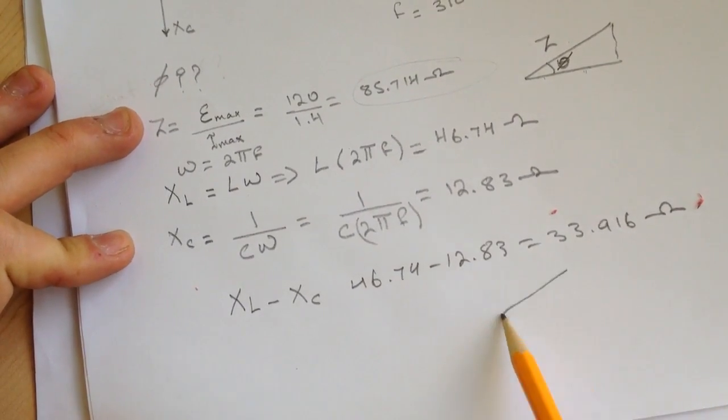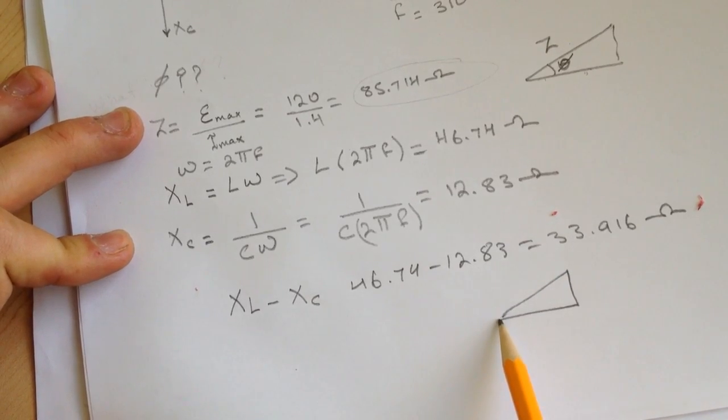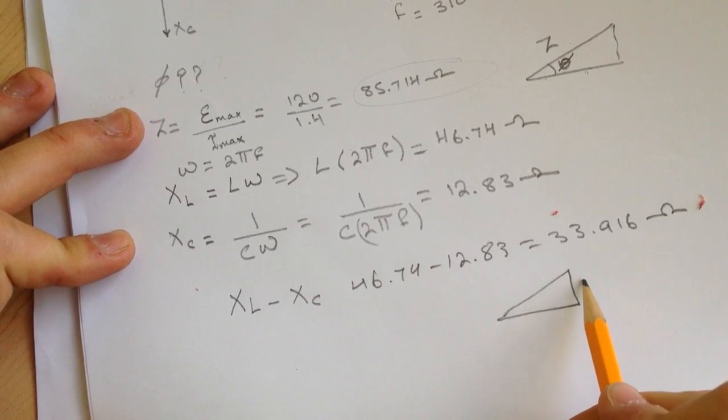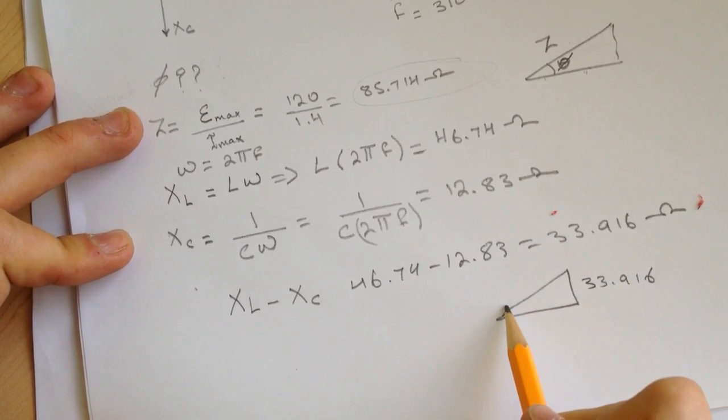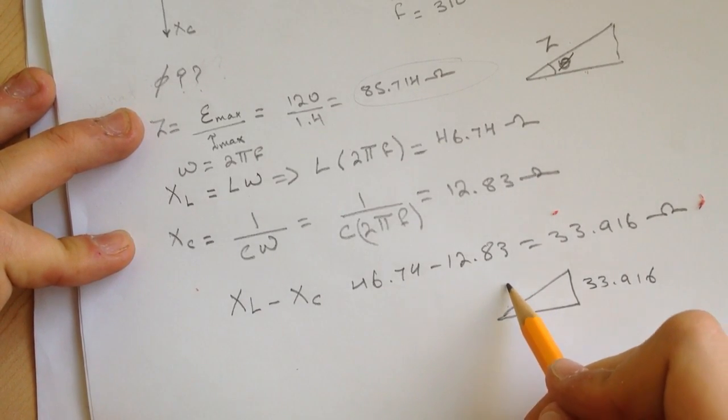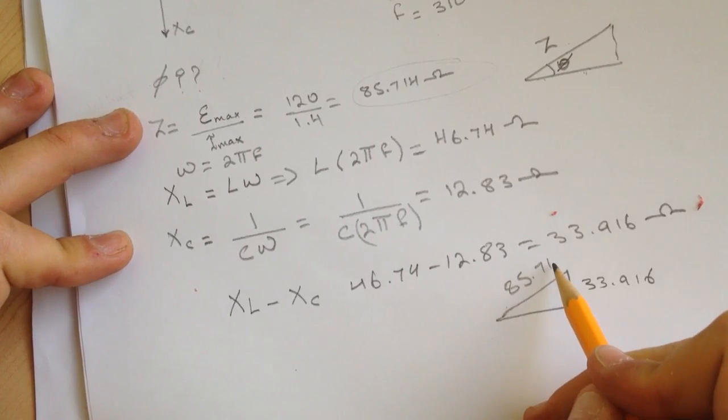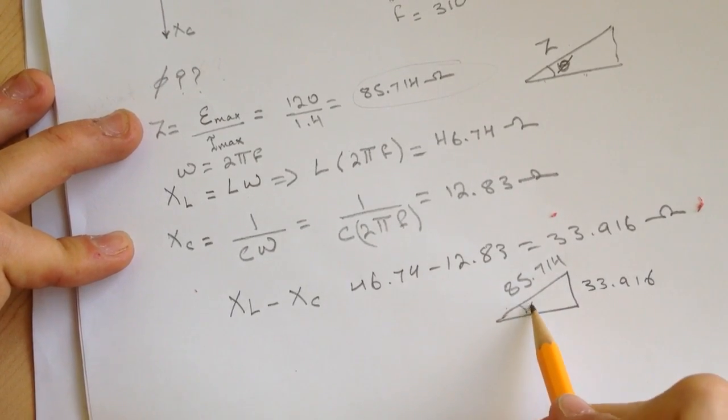All right. Now we have the triangle. We have two elements of the triangle. We can find the other one. So this one is 33.916, and this one, the impedance is 85.714. This is the phi.